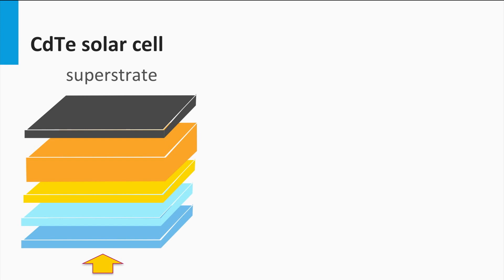A superstrate configuration is a cell concept in which the substrate on which the solar cell is processed acts as the front window at which the light enters the solar cell.